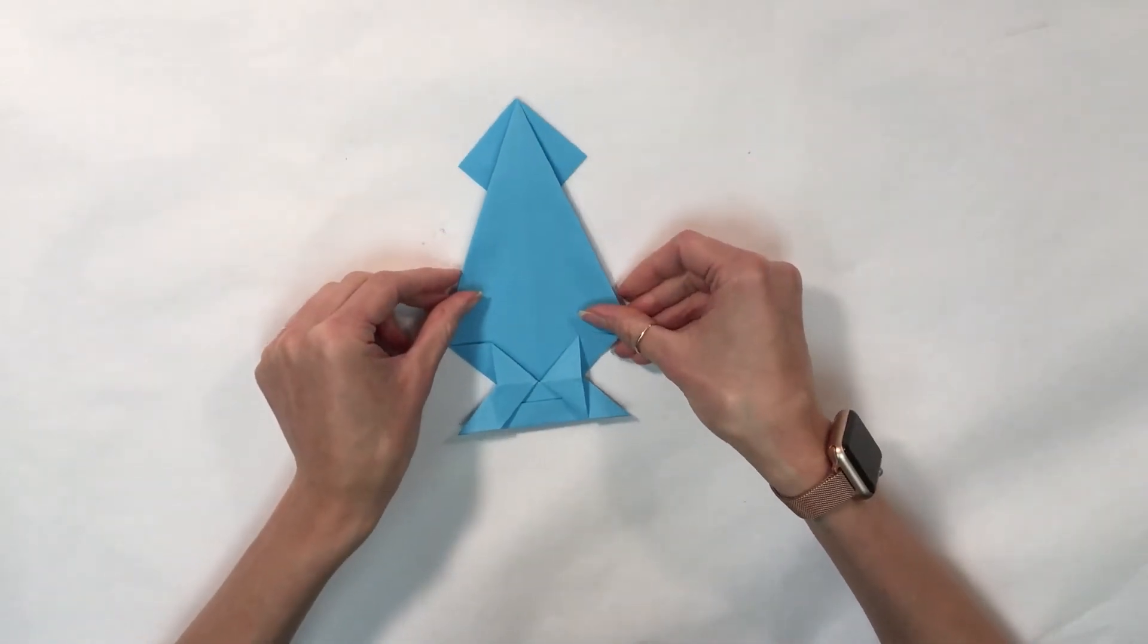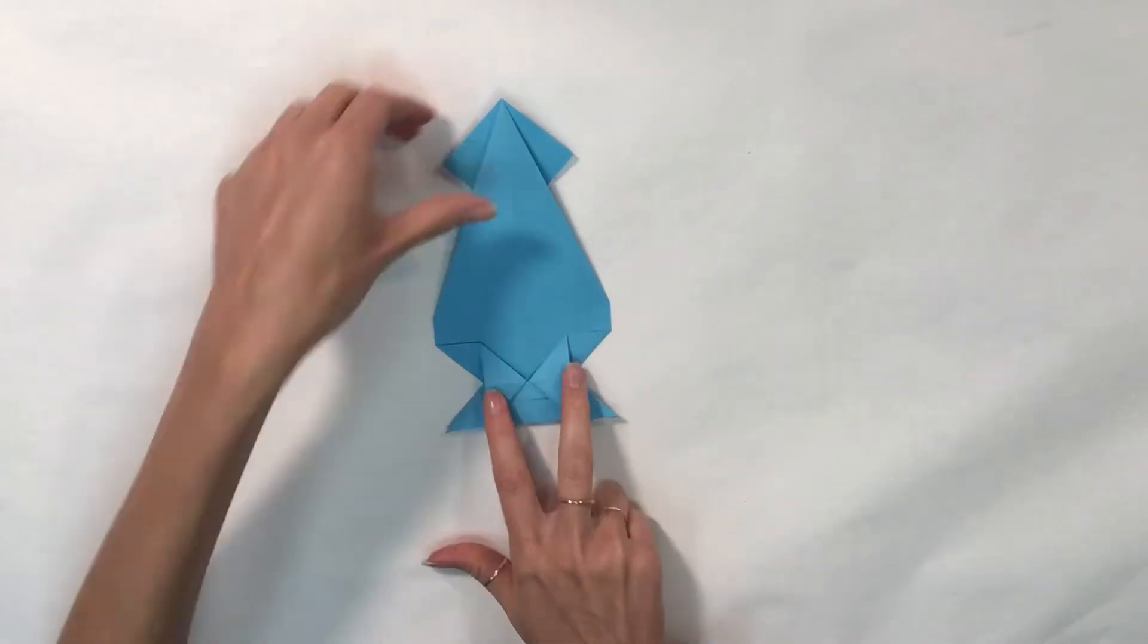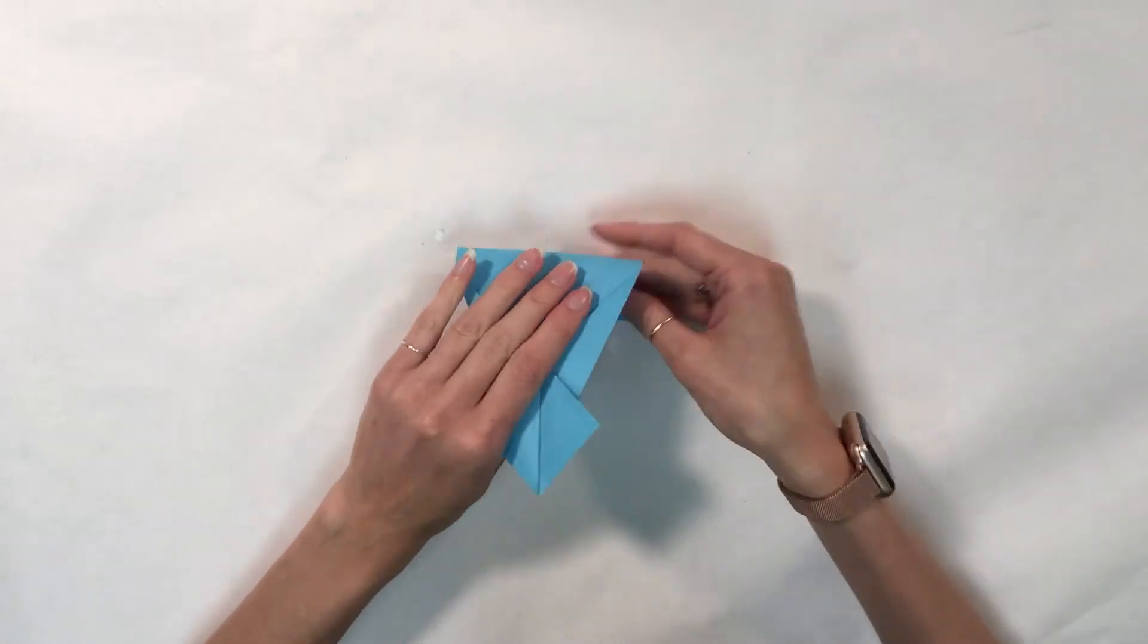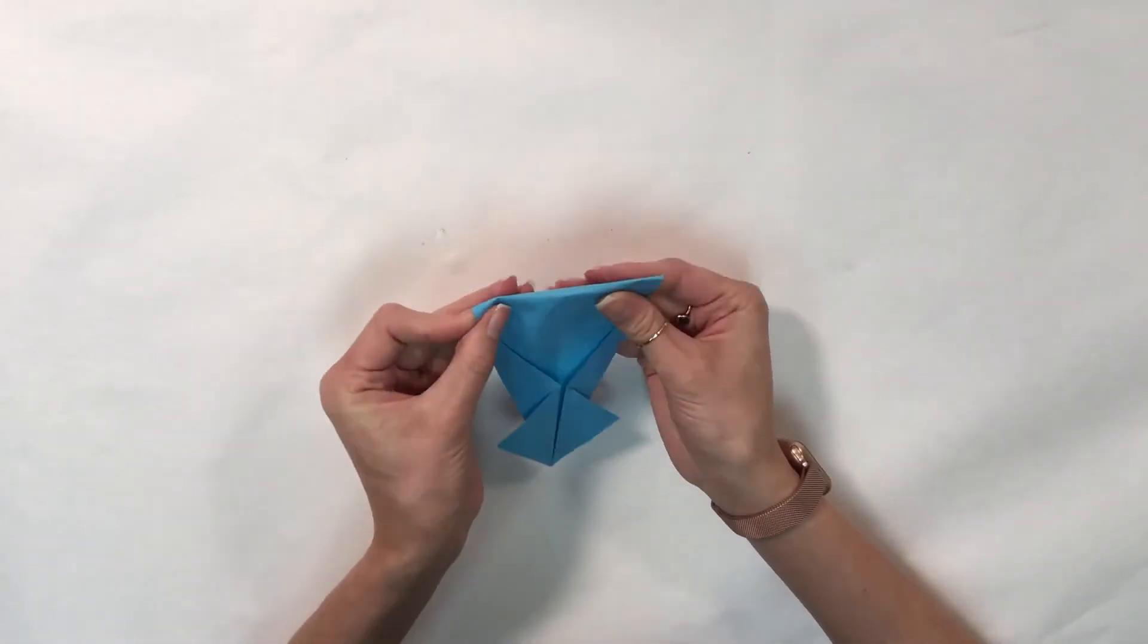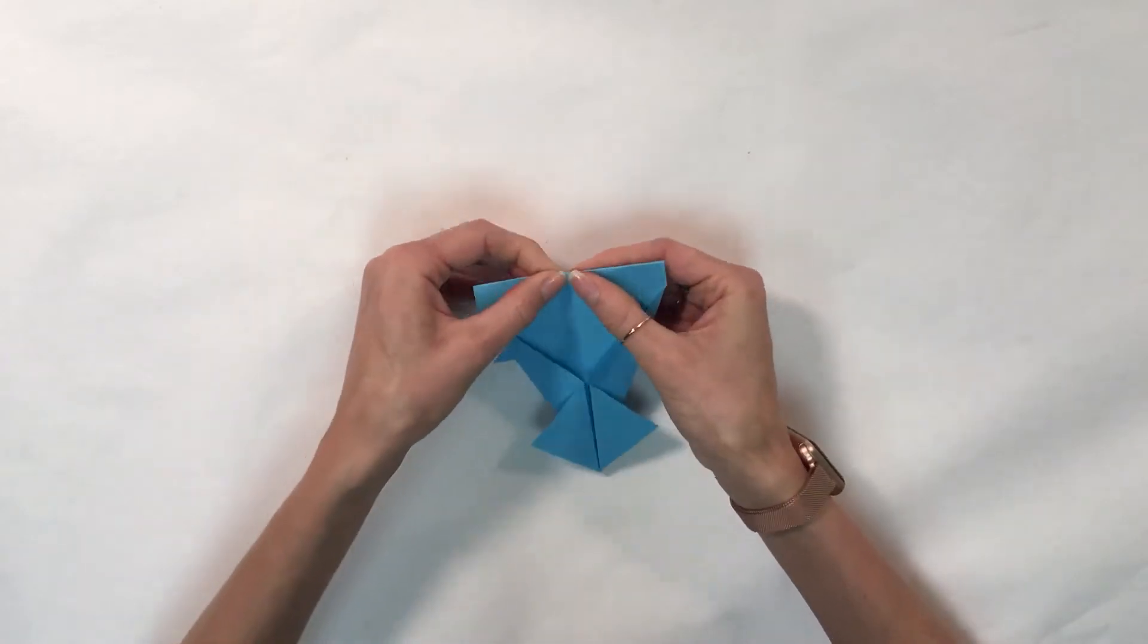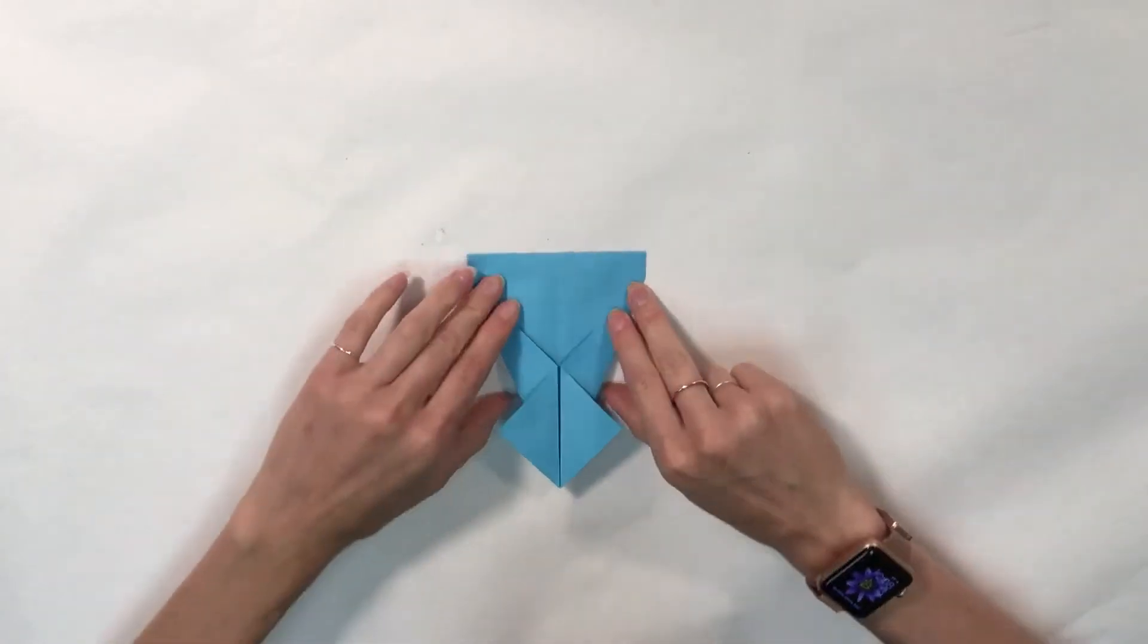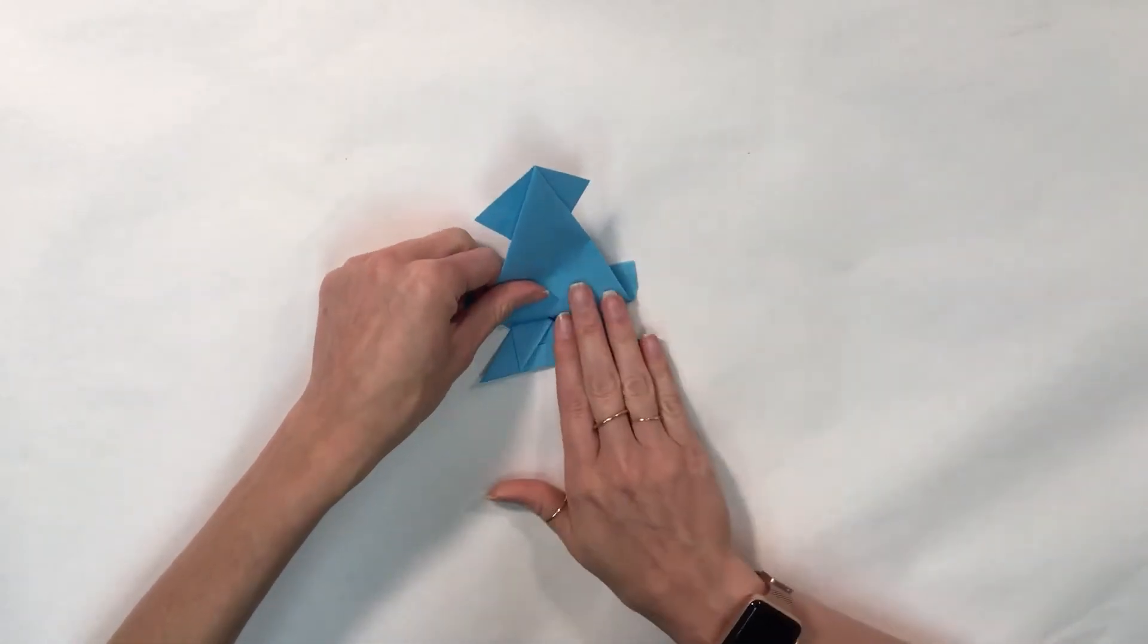Now I'm going to flip my paper over and fold the top edge to where this fold is on my paper. And then I'm going to fold my paper up to where the diagonal ends.